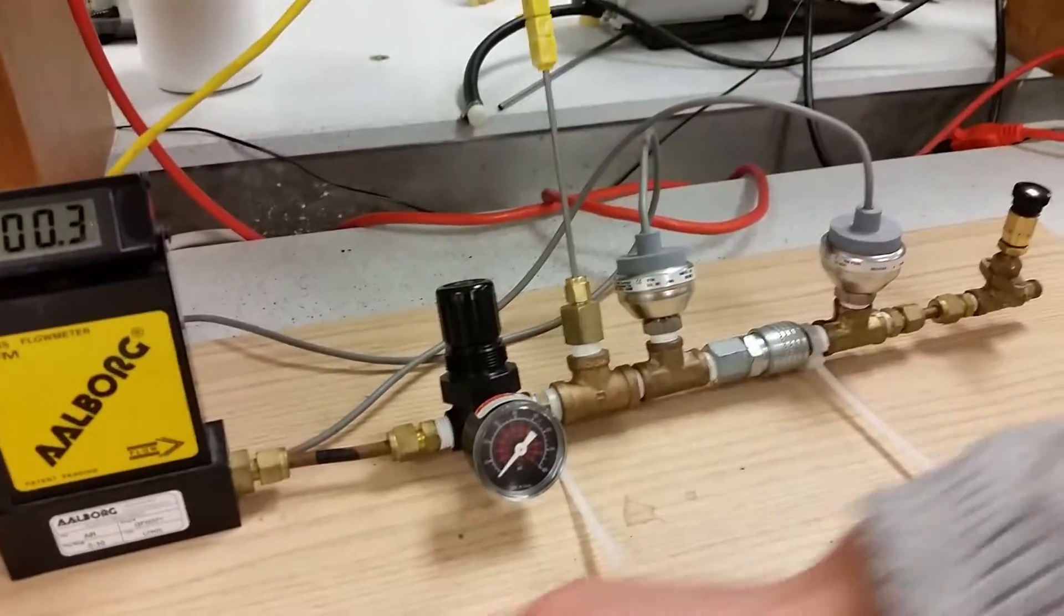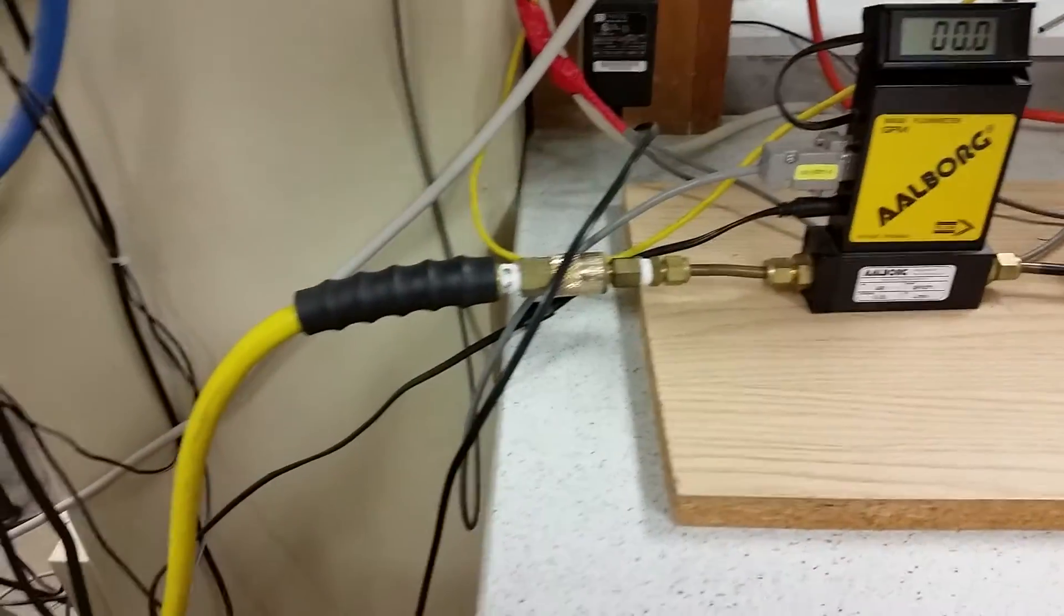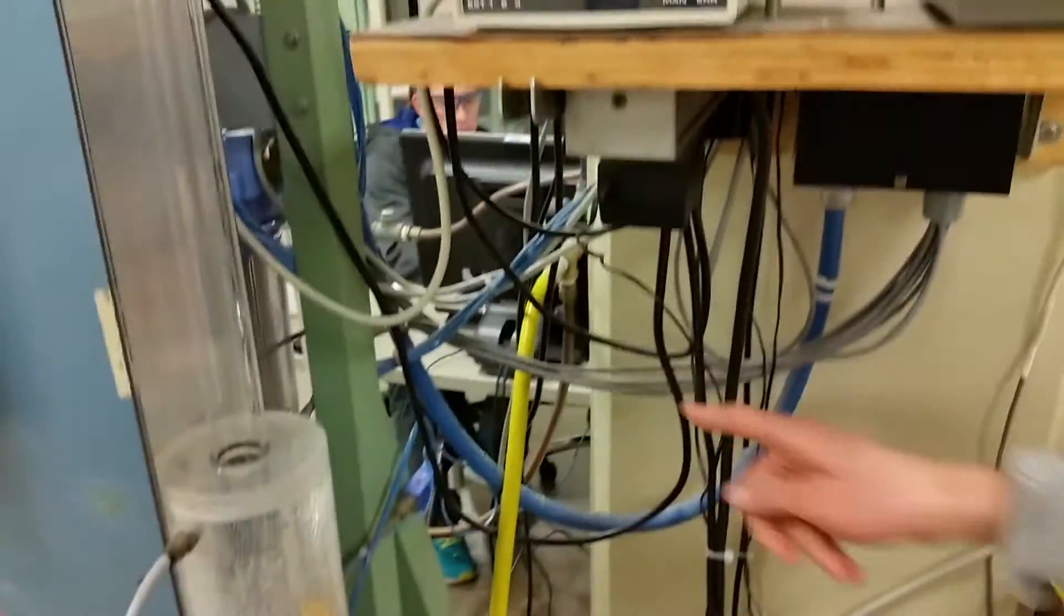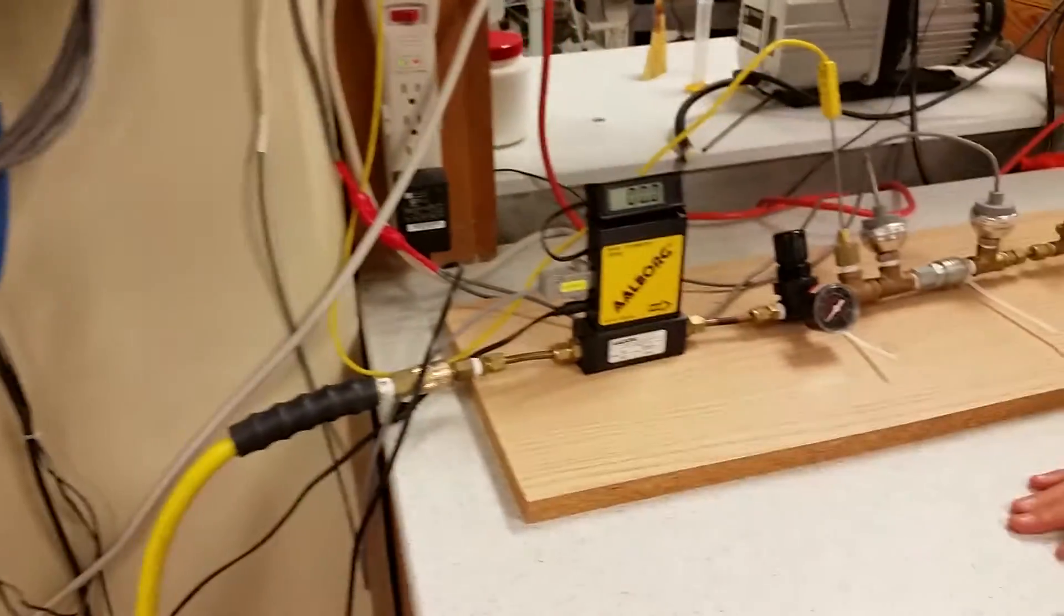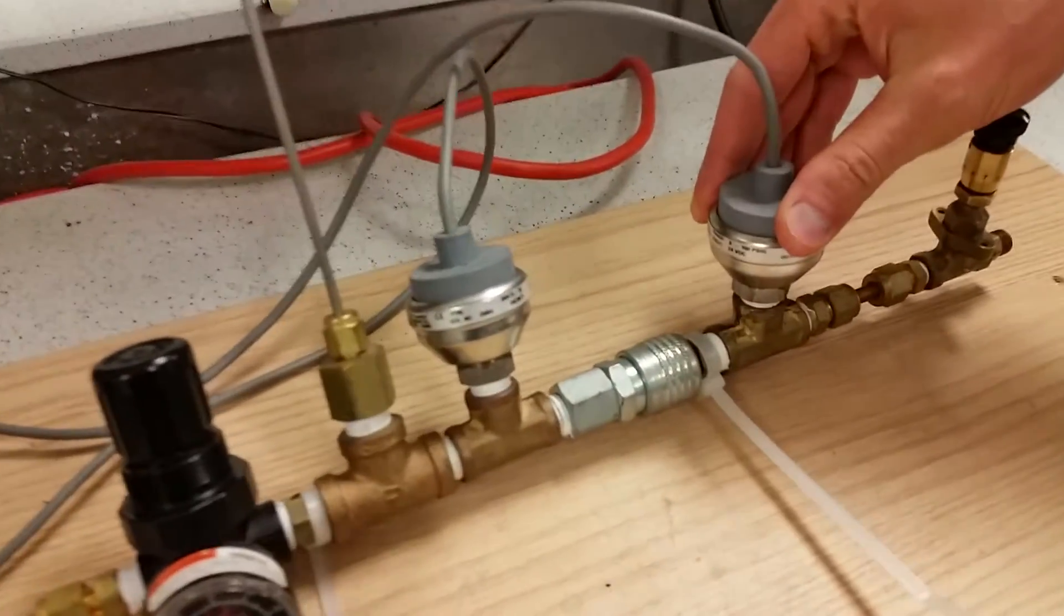This is our pressure regulator. This is where the air comes in. Around the corner, as you follow the yellow line, it goes to a gauge which is at 80 psi. These are pressure measurements, right?